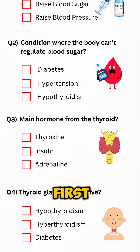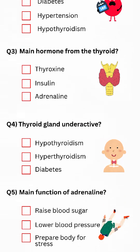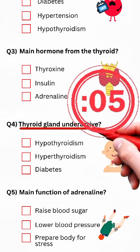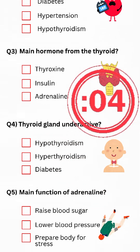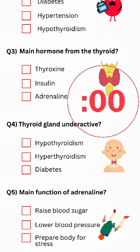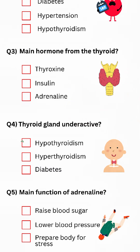If you got the first 3 correct, hit the like button. Question 4: What is the condition when the thyroid gland is underactive? Answer: Hypothyroidism.